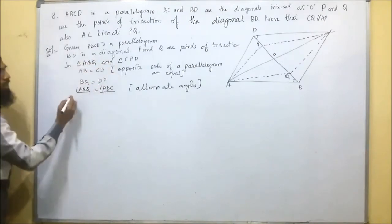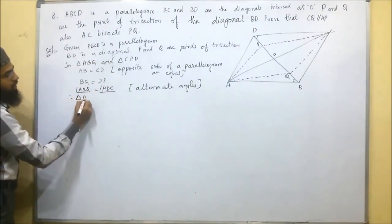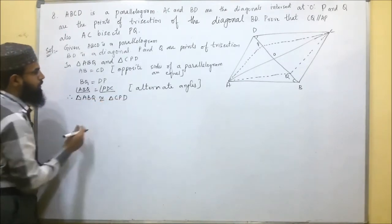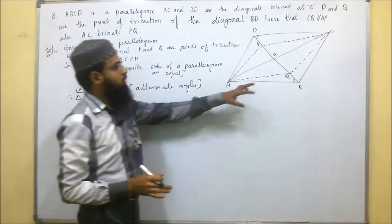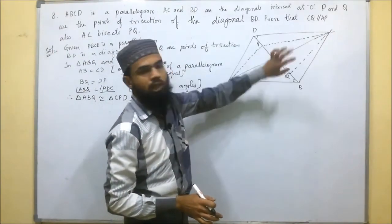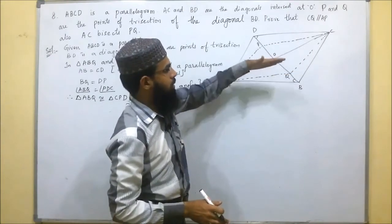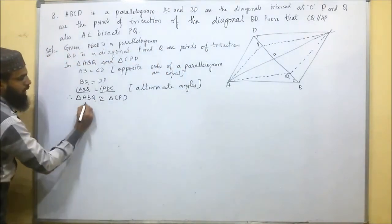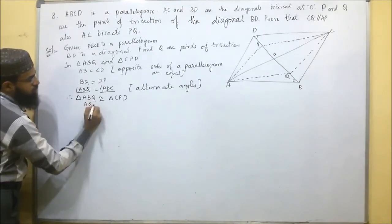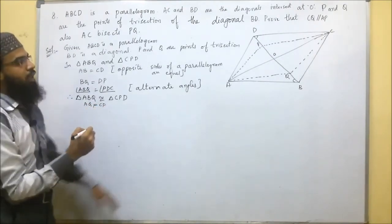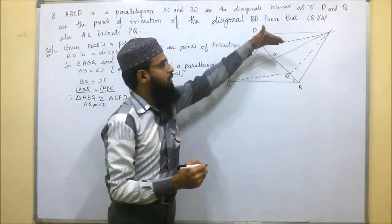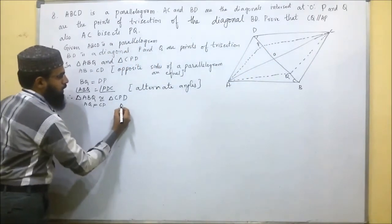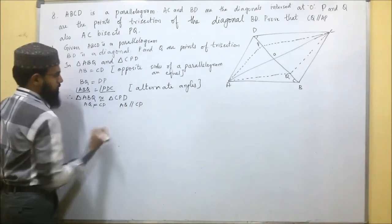Because of these three conditions, the two triangles are congruent. Therefore, triangle ABQ is congruent to triangle CPD. Since these two triangles are congruent, their corresponding parts are equal, so AQ is equal to CP.